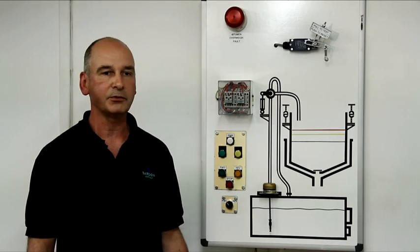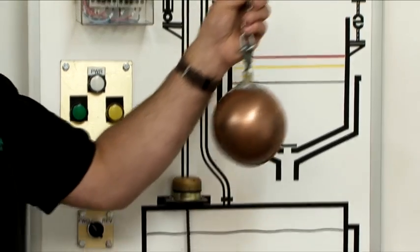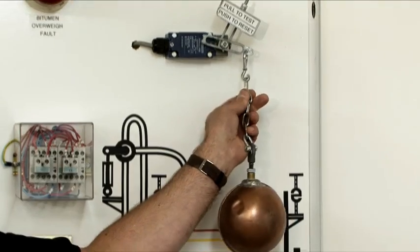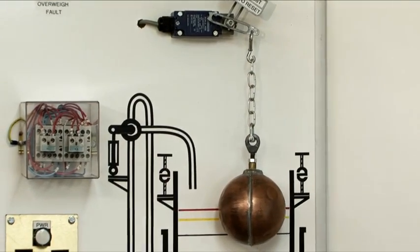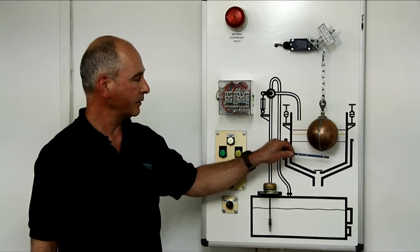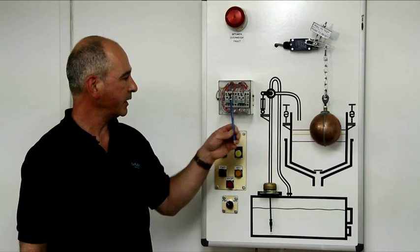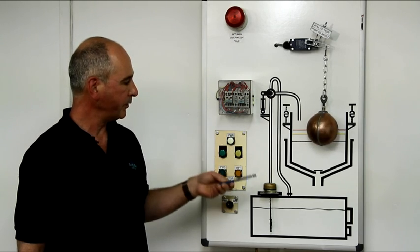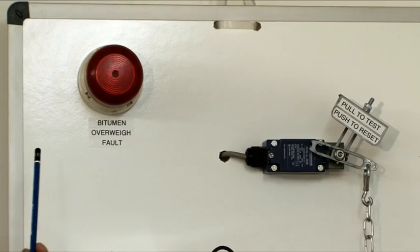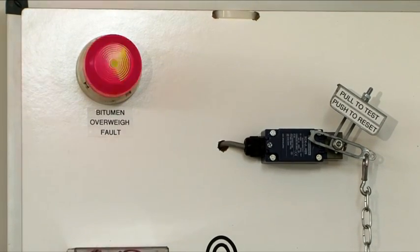To eliminate the risk of bitumen spills, we at Halton East have developed a simple float system which involves a copper ball which fits onto a limit switch which is common throughout the plants. Now as the bitumen rises up to the R level, it lifts a copper ball, the limit switch disengages the contactors stopping the pump and also puts a warning light on in the control cabin to warn the operatives of an overweight fault.